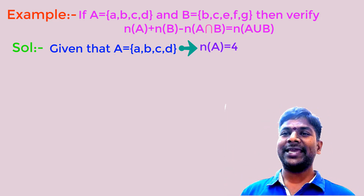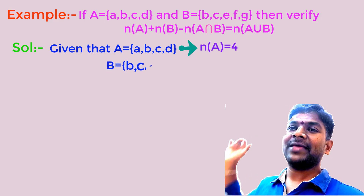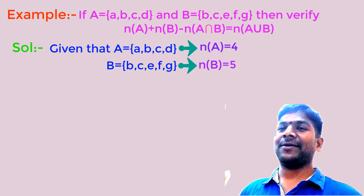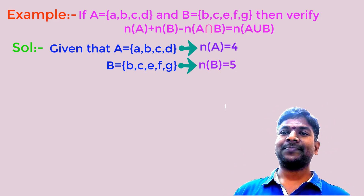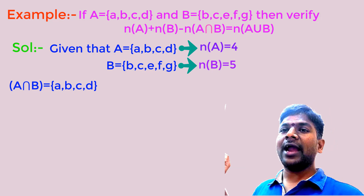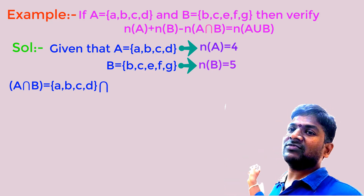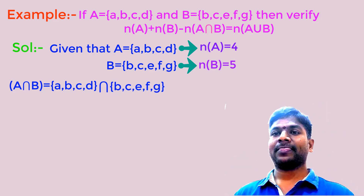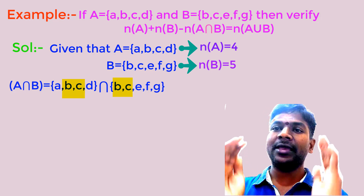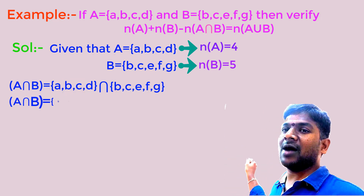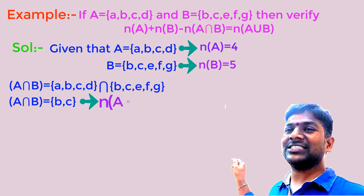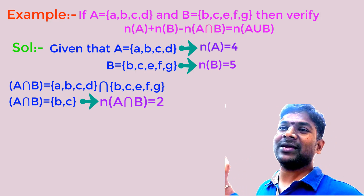Now consider set B = {B, C, E, F, G}. How many elements are in set B? 5. So N(B) = 5. Now calculate A∩B. The elements of set A are A, B, C, D and the elements of set B are B, C, E, F, G. The intersection consists of common elements. The common elements in set A and set B are B and C. So A∩B = {B, C}. How many elements are in A∩B? 2. So N(A∩B) = 2.